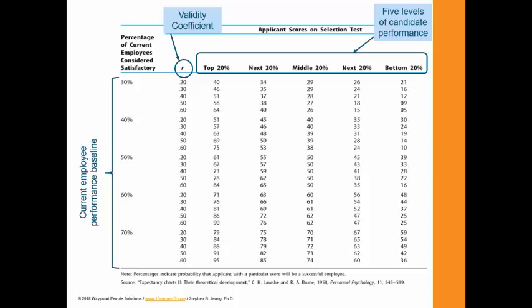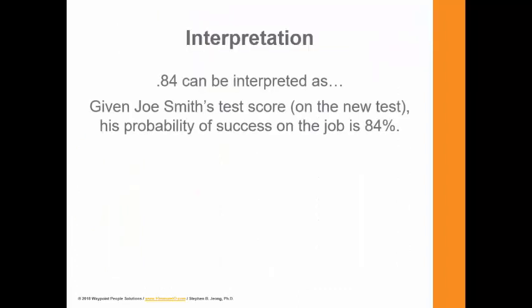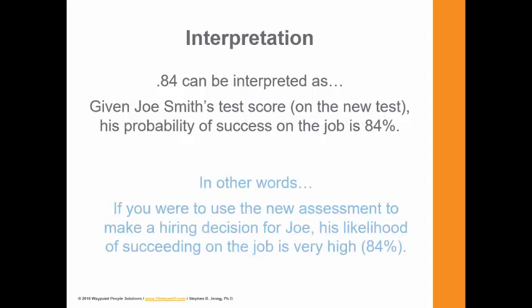Take a look at the table. The performance baseline is still 50%. But this time the test is better — instead of 0.3, we have 0.6 as the validity coefficient. Instead of scoring in the second tier, Joe has now scored in the top 20%. That takes us to 84%. Given Joe's test score, his probability of success on the job is 84%. If you were to use this assessment to make a hiring decision for someone like Joe, his likelihood of succeeding on the job is very high at 84%.